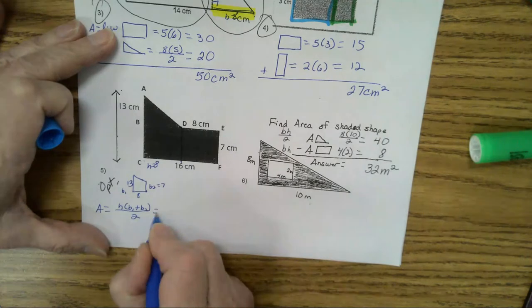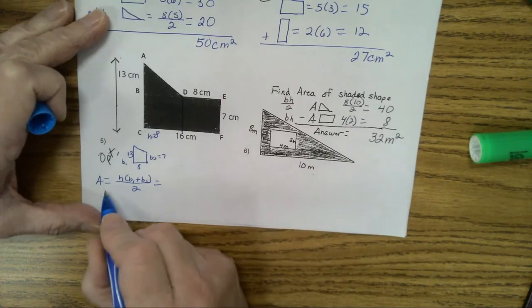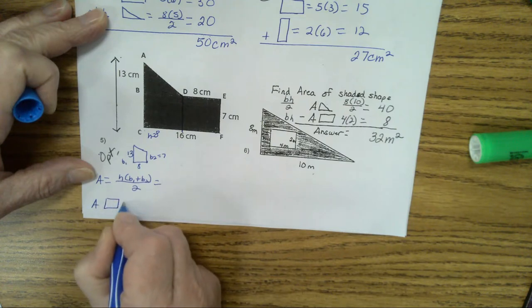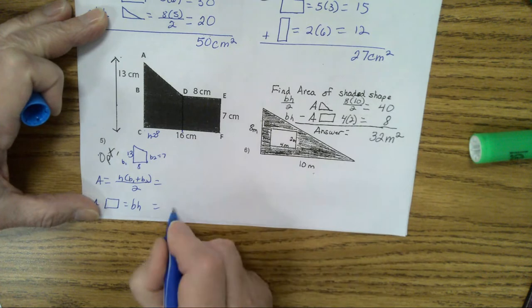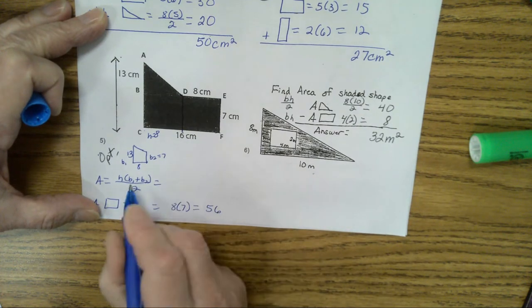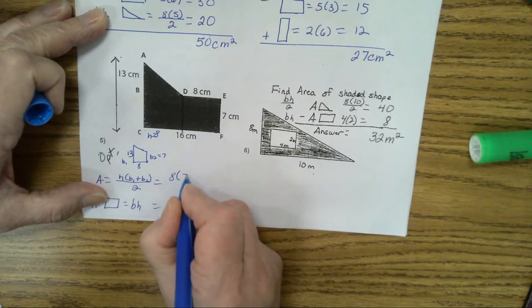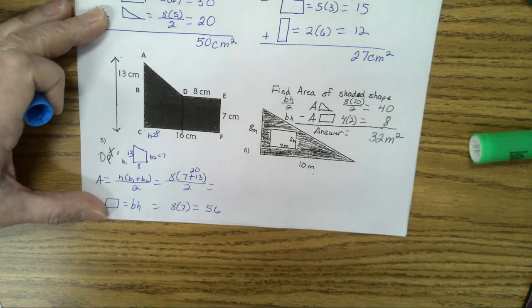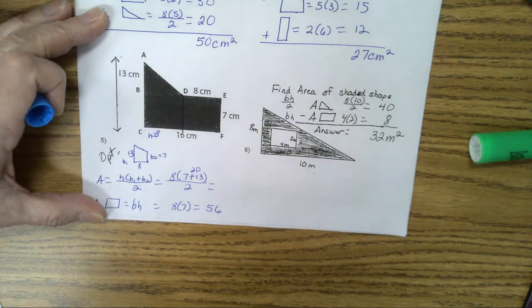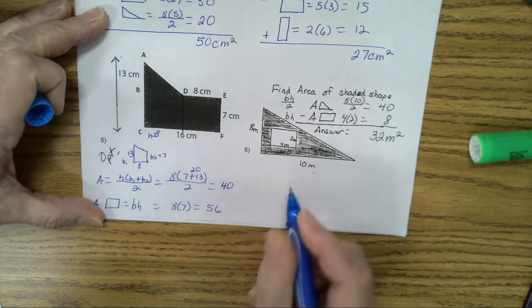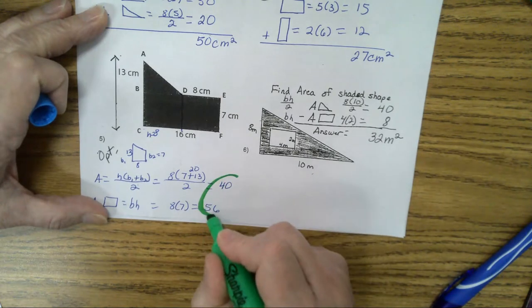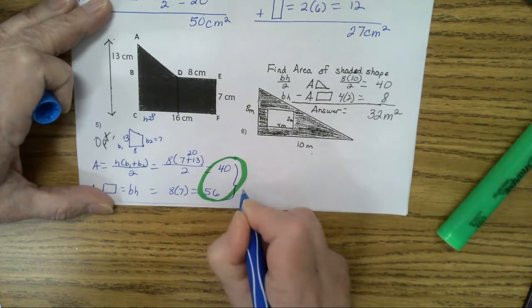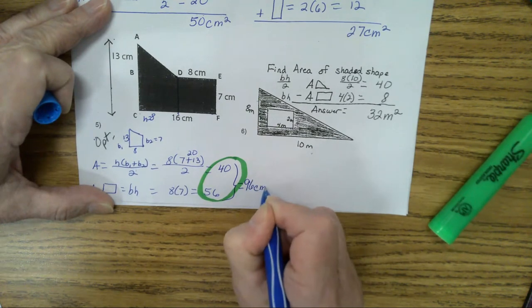The formula for the area of a trapezoid equals the height times B1 plus B2 divided by 2. Some of you noticed that was a trapezoid. We could have used the trapezoid formula, but we were doing composite shapes. And I just put a rectangle and a triangle together for that. So back to this problem, we also have, besides the trapezoid, we have the rectangle. So the area of the rectangle equals base times height. That's going to be 8 times 7, which is 56. This one is going to be 8 times 7 plus 13 divided by 2. 7 plus 13 is 20. 8 times 20 is 160 divided by 4 is 40. Now what do I do to these two answers here? Add them together. Did you get 96 for your answer number 5? When you add them together, it equals 96 centimeters squared.